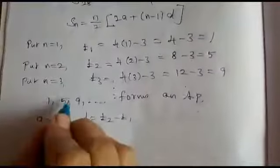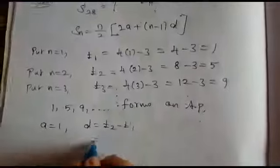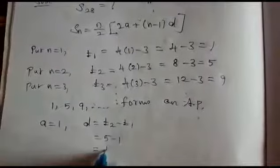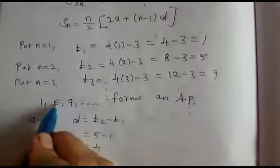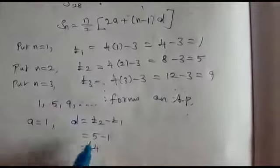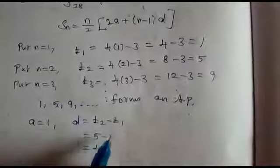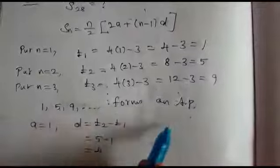Common difference d equals T2 minus T1. What is T2? 5 minus 1. It is 5 minus 1 equals 4. Next, T3 minus T2 means 9 minus 5. 9 minus 5 is also 4. So common difference is equal. Therefore, this sequence forms an AP.